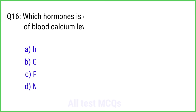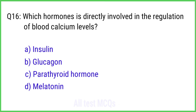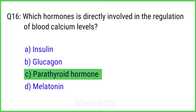Question No. 16. Which hormone is directly involved in the regulation of blood calcium levels? The right answer is Option C: Parathyroid hormone.